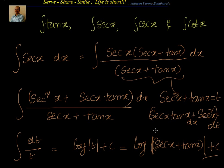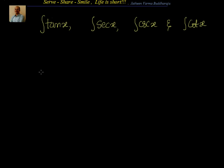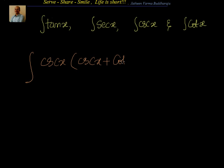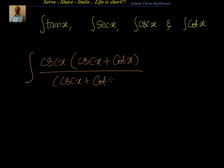In the same way, let's find the integral of cosec x. We use the same logic and multiply cosec x with cosec x plus cot x in both numerator and denominator. We take cosec x plus cot x equal to t.